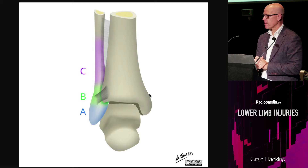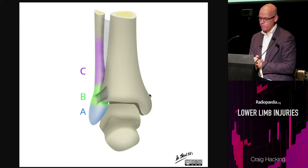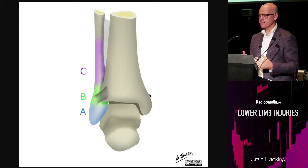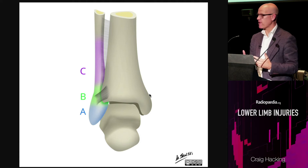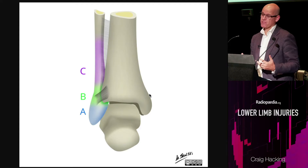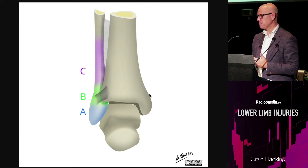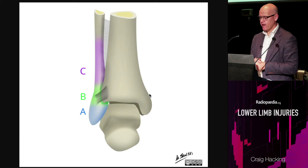For that distal fibula fracture, we have the Weber classification system — very simple. A's are below the syndesmosis, B's are at the level of the syndesmosis, C's are above the syndesmosis. A's you can treat conservatively — put them in a moon boot or a cast and they heal fine.